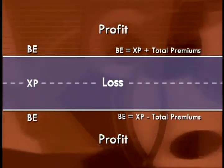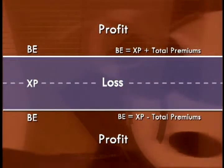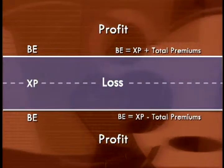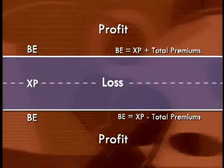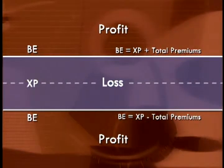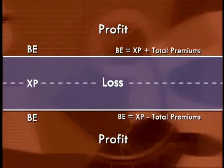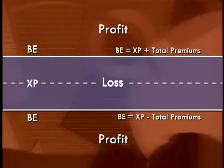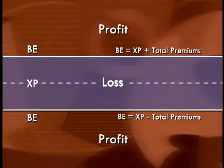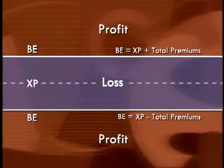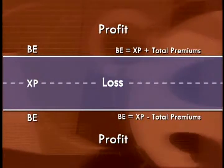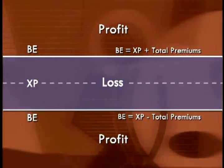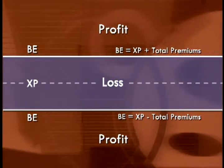Where will we have a loss? Only if the stock stays between the two break-even points — if we don't get enough movement in the value of the underlying stock. As the stock rises above the break-even point, the investor's profits will continue to increase, so the maximum profit is theoretically unlimited. The investor's maximum loss occurs when the market value equals the strike price — both options expire worthless and the investor loses both premiums. So the maximum loss in a long straddle is the total premiums paid.